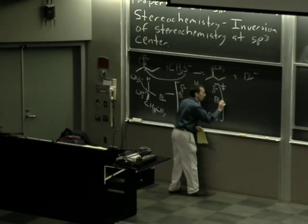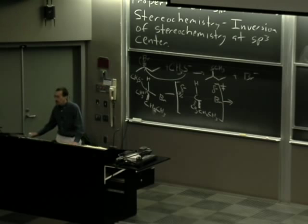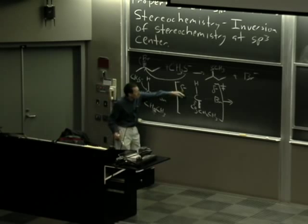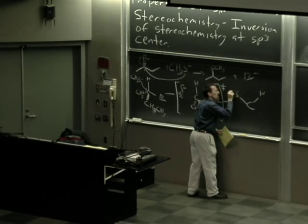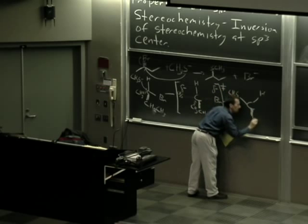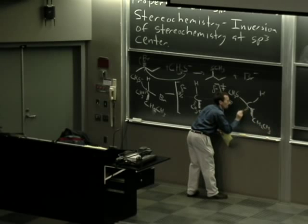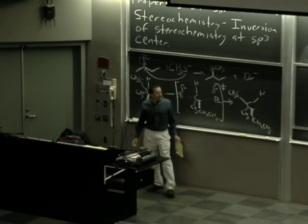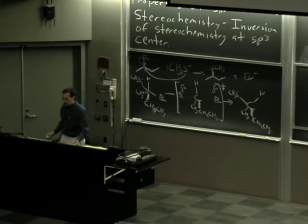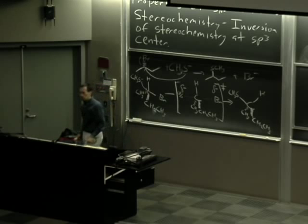As we pass through the transition state to our product, now we have the sulfur bonded to the carbon. The thiomethyl group is present, the ethyl group is still pointing out of the board, and the methyl group is still going back into the board. The overall result of this process is inversion of stereochemistry at the SP3 center.